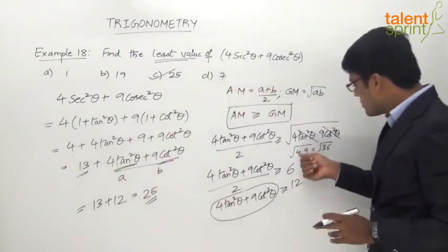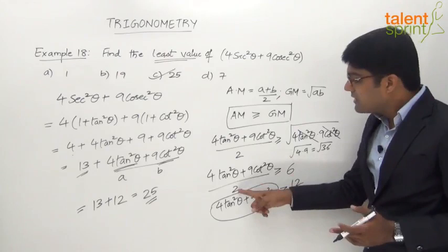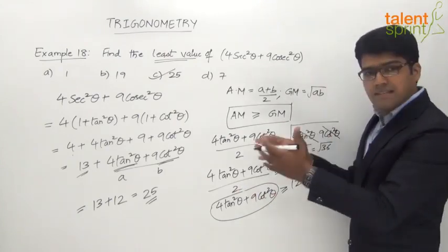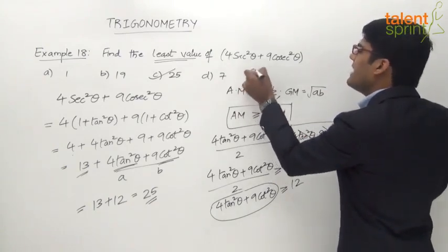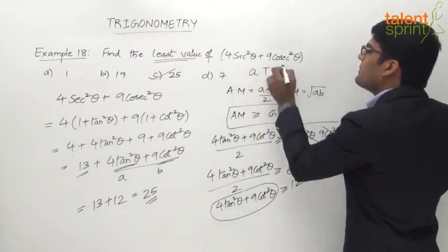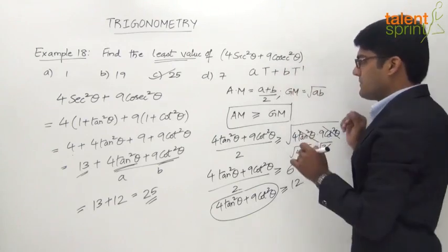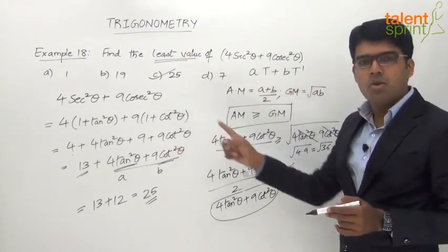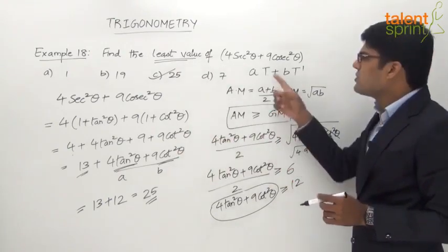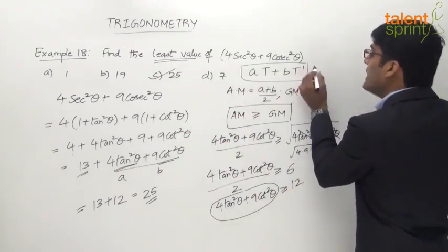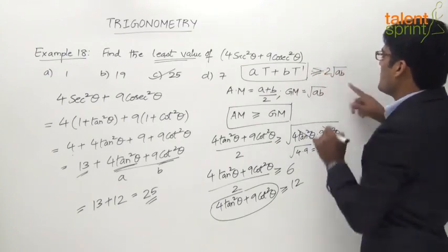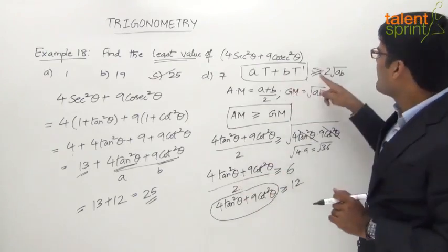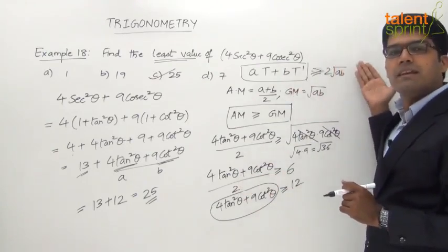With coefficients a and b, √(a × b) gives the geometric mean, and multiplying by the 2 from the denominator of the arithmetic mean gives 2√(ab). So for an expression of the form a·t + b·t', where t and t' are reciprocal trigonometric functions, the minimum value is 2√(ab). In our example, 2√(4×9) = 2√36 = 2×6 = 12.